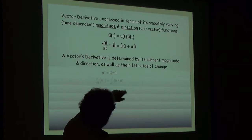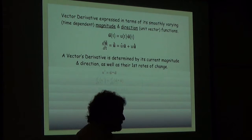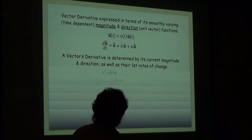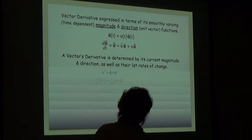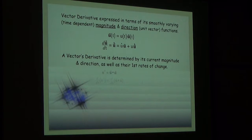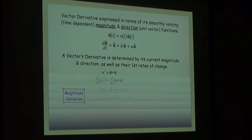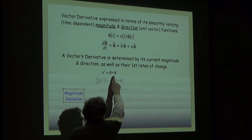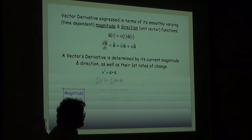Any vector could be expressed as the product of its scalar magnitude times its unit vector direction. When you differentiate a product, the appropriate rule is the product rule. You can see that is certainly one correct way to express the derivative: the rate of change in magnitude pointing in the direction of the vector itself, plus the magnitude times the time rate of change of the unit vector.